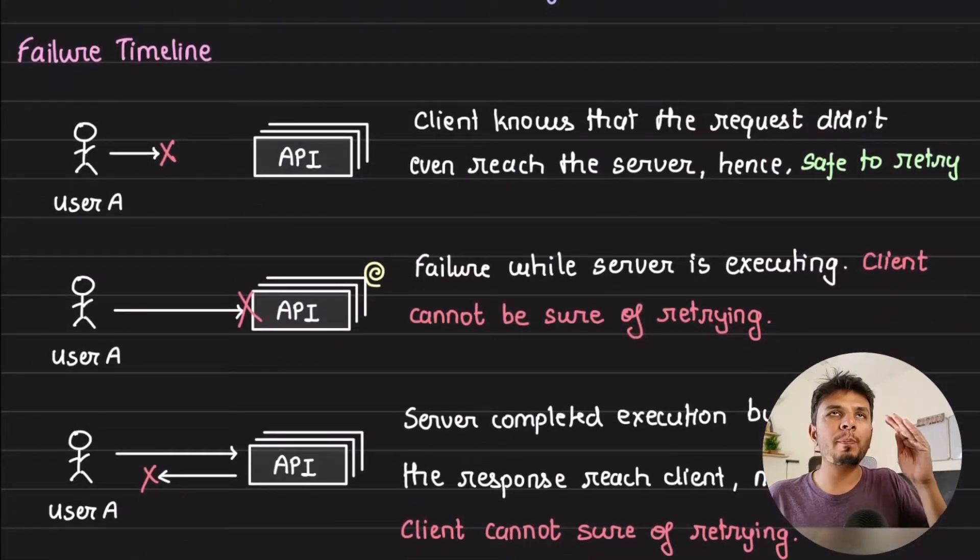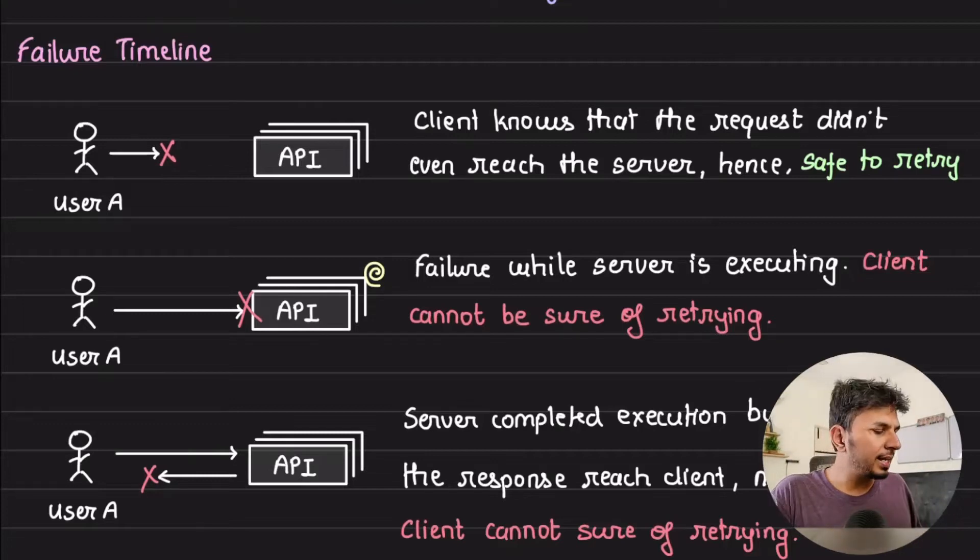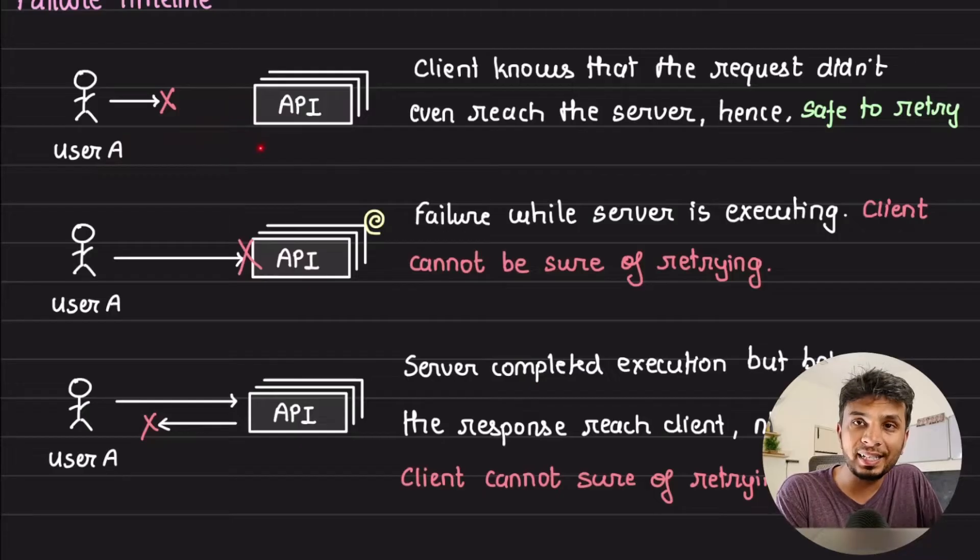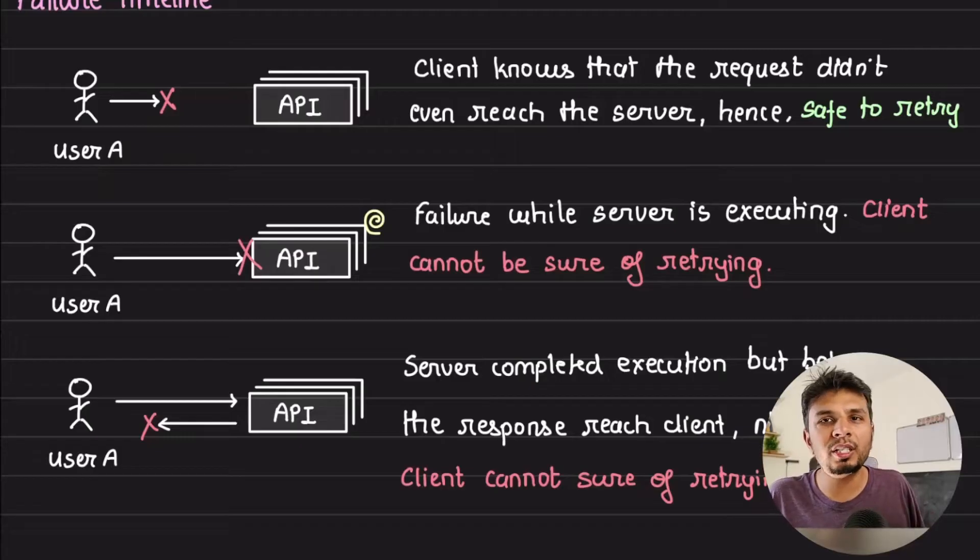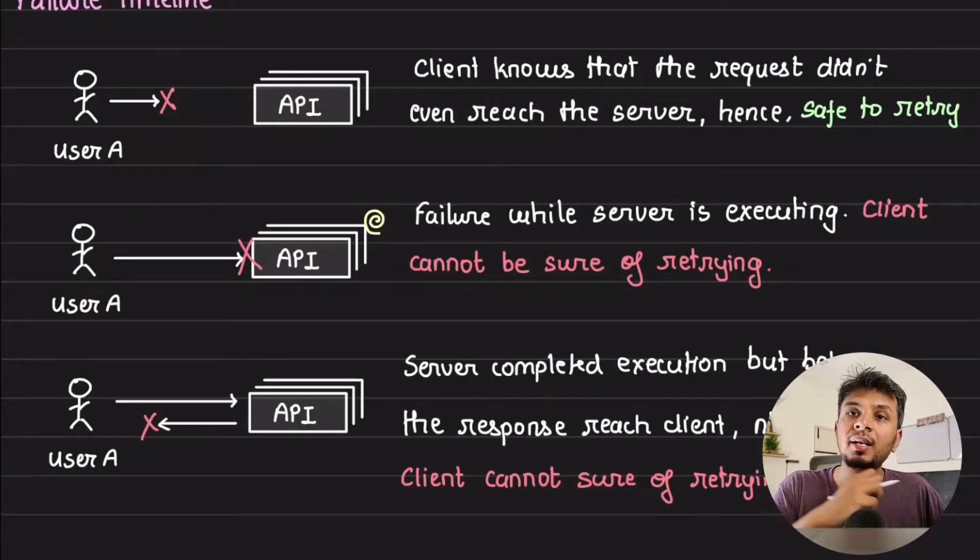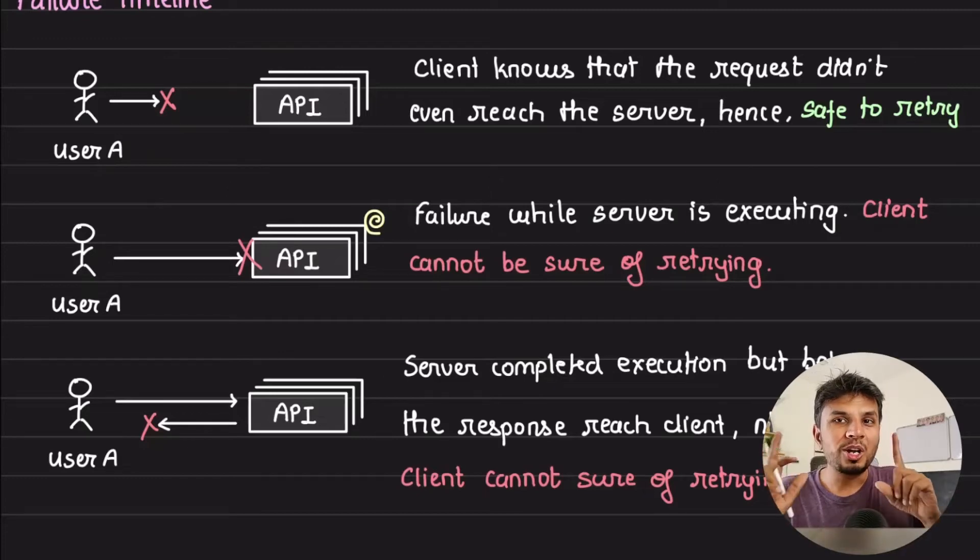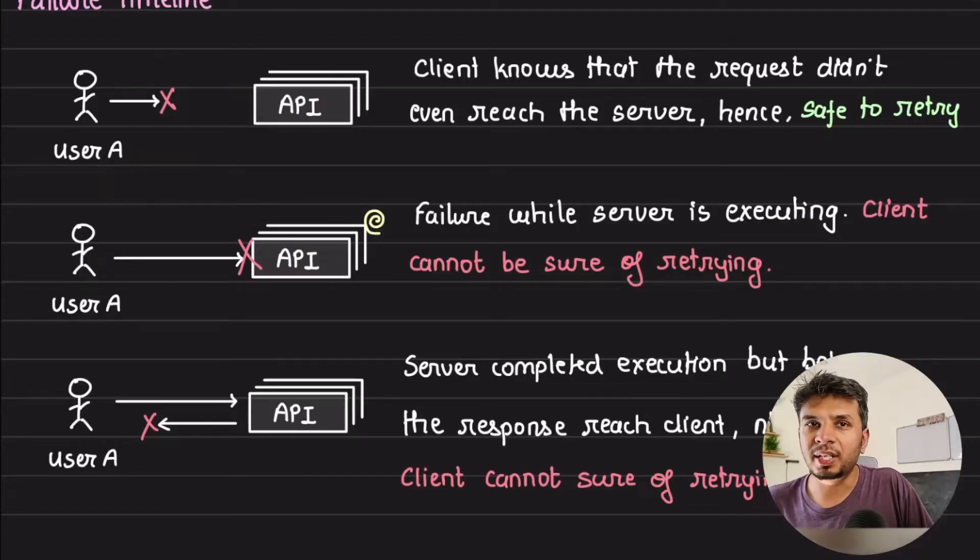Let's look at the failure timeline on where possibly the failure could have happened. First, user A makes an API call but before this call even hit the server the network got interrupted, which means the request did not even hit the server. In this case you can automatically retry. Second situation is when the request hit the server, the server started processing it, but before the process could even complete the network got terminated. In this case you are not sure if you should retry or not because you don't know at which stage of the server processing the network became unreliable.